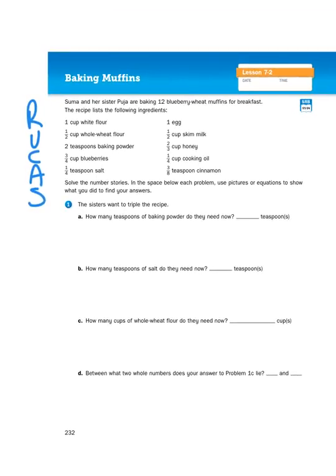So let me read the top couple of sentences. Suma and her sister, Pooja, are baking 12 blueberry wheat muffins for breakfast. The recipe lists the following ingredients, and you can read all the ingredients.